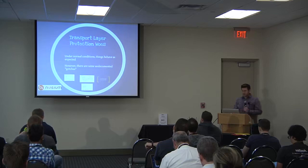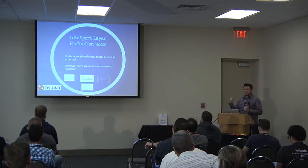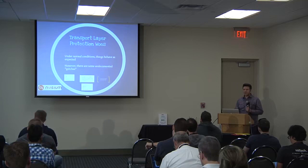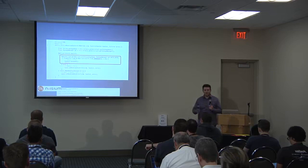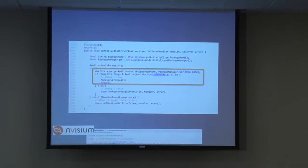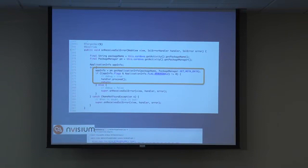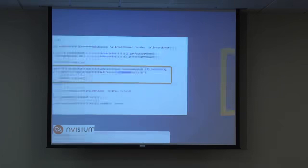Moving to transport layer issues: normally an HTTPS client should break if there are certificate errors. But PhoneGap has an undocumented gotcha — if you have the debuggable flag enabled in the manifest, PhoneGap disables SSL certificate checks entirely. The recommendation is to make sure that flag is turned off when deploying to production.